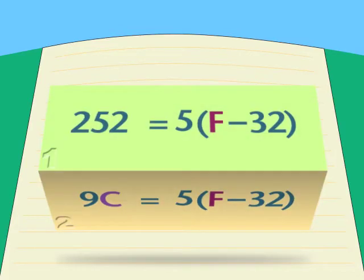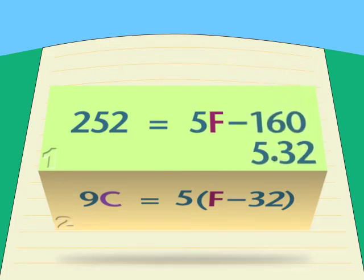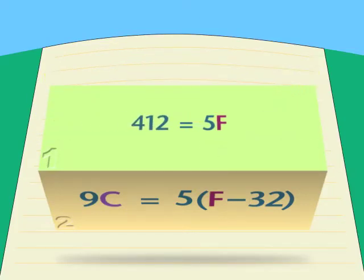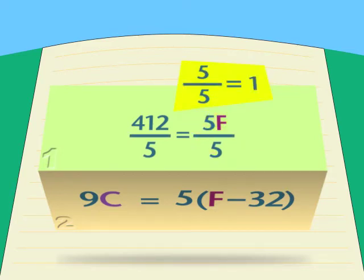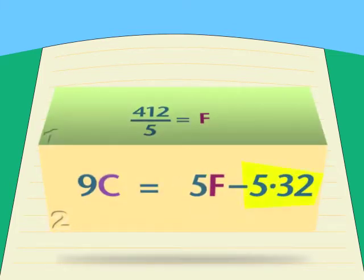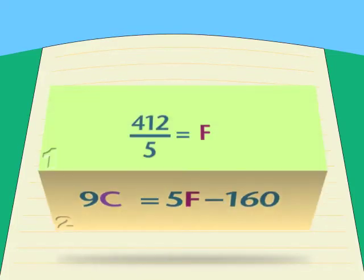With no more fraction, we can get on with the next step. Isolate the 5F by itself on one side. We have to move the negative 160 by adding a positive 160 to both sides, leaving us with our variable all alone on the right. We have 5F. We want 1F, which is just plain F. So we divide both sides by 5, and cancel out on the right to have just plain F. What does that give us in problem two? A formula for F. Using exactly the same steps that gave us 412 over 5 in problem one, or 82 and two-fifths, the same answer we got earlier.